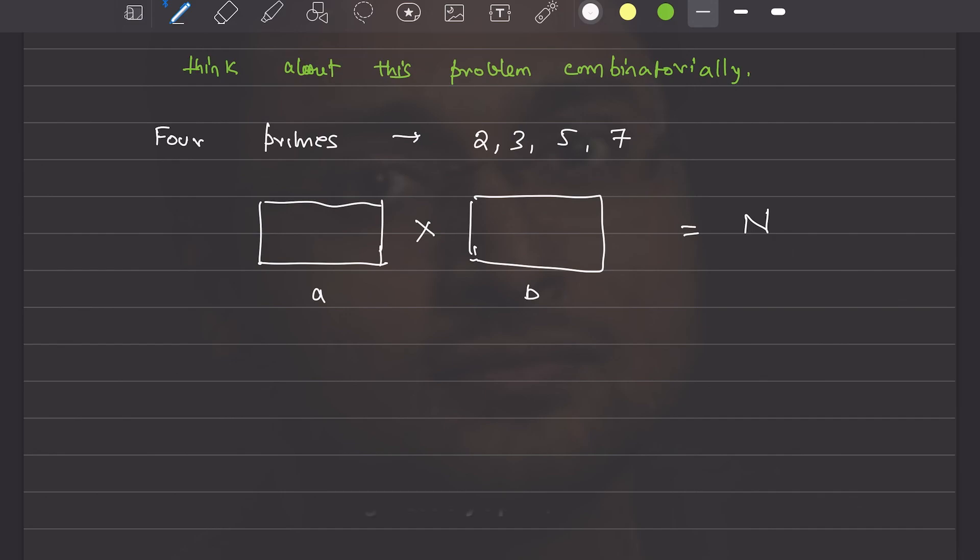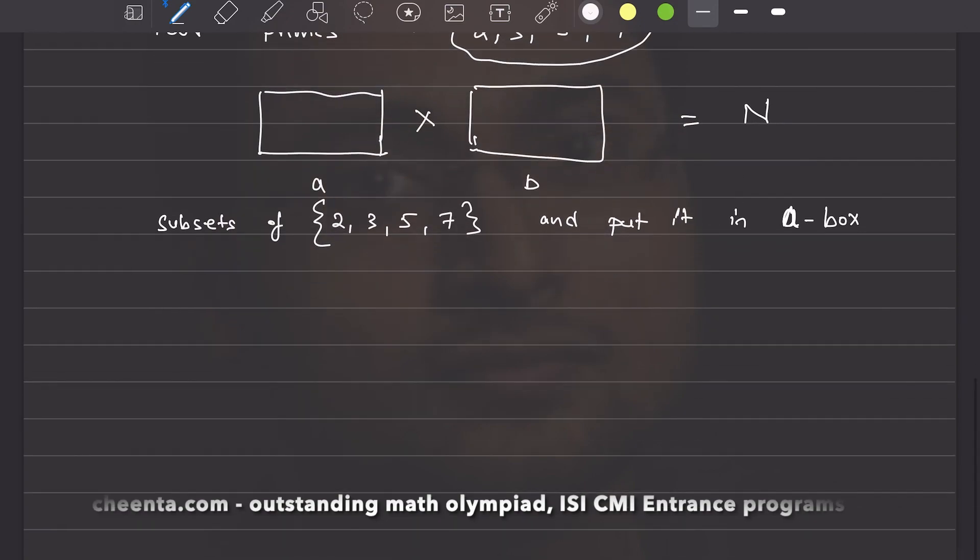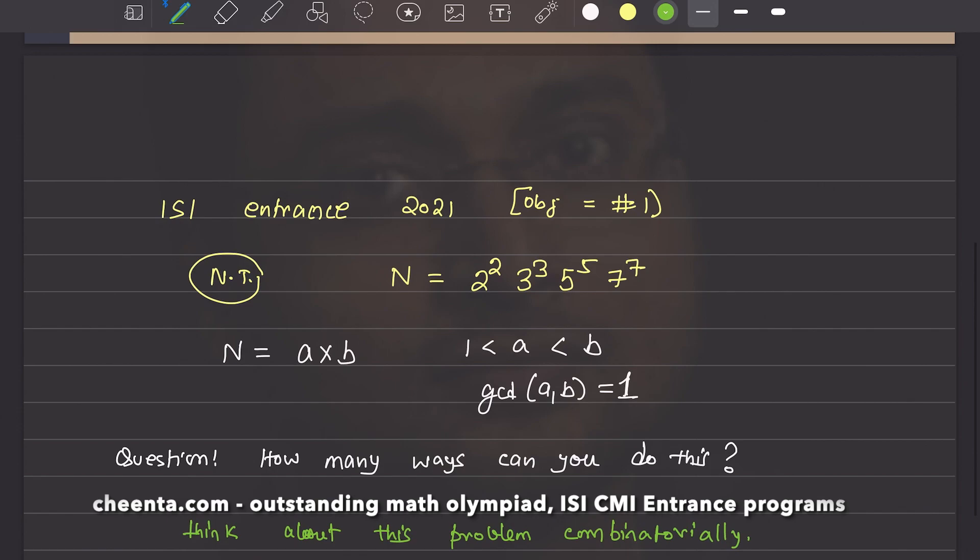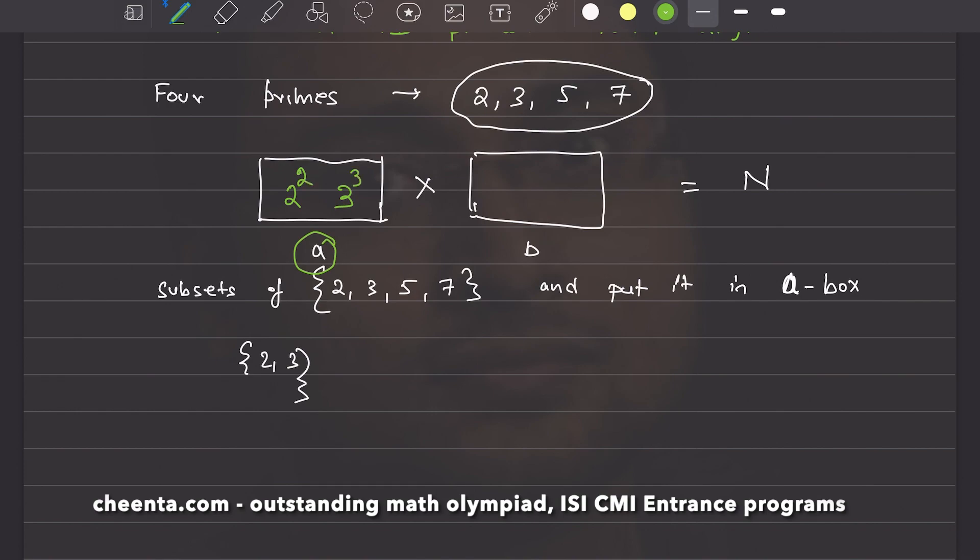We want to build subsets out of these four numbers: two, three, five, seven, and put it in a box. For example, if I make the subset two comma three, I can put the prime factors two and three inside the box named a, but what I'm actually doing is I'm writing two square and three cube because I have to put all the twos and all the threes in the same box.